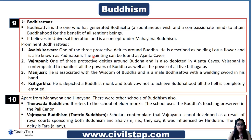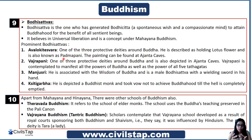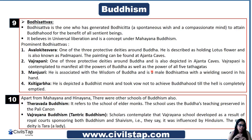Now let's look at prominent Bodhisattvas. Avalokiteshwara is one of the three protective deities around Buddha seen in paintings. He is described as holding a lotus flower and is also known as Padmapani. His paintings are also found in the Ajanta Caves. Vajrapani represents and contemplates the powers of Buddha as well as the power of all five Tathagatas. Manjushri is associated with the wisdom of Buddha and is a male Bodhisattva depicted wielding a sword in his hand.